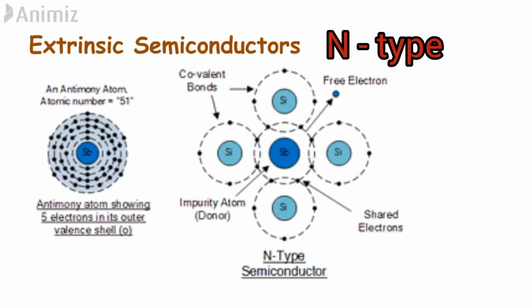So what happens? In this process one of the five electrons is left behind without taking part in the forming of the bond. So this electron has the opportunity to move freely in the lattice.